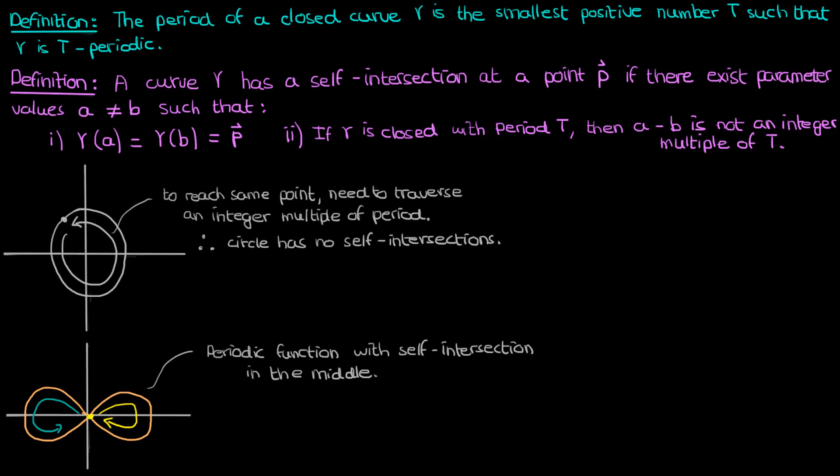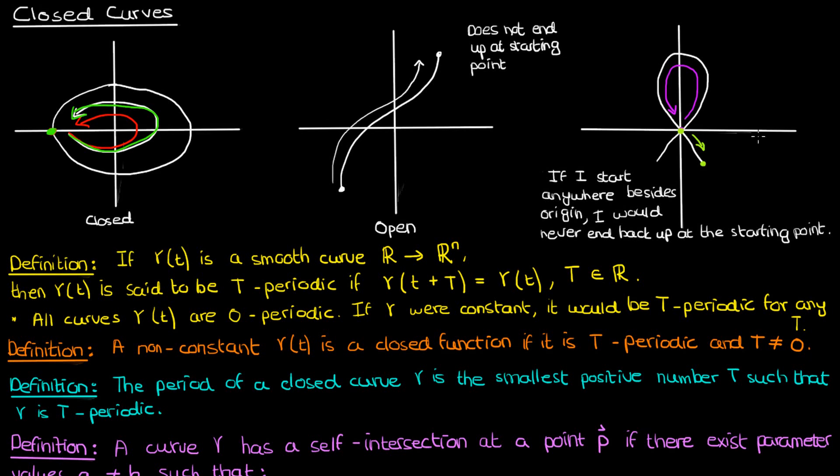To end back up at the other points, you would have to traverse an integer multiple of the period. If we now go back to that ambiguous curve we drew earlier, we can see that while it isn't closed or periodic, it does have a self-intersection at the origin. And the reason it isn't closed is that by this definition of a T-periodic function and by this definition of a closed function, we would have to be able to return to any point that we start at. Here, the only point that we can return to is the origin. But if I started somewhere besides the origin, then even traversing the curve would not return me back to that same point. So this function cannot be closed.